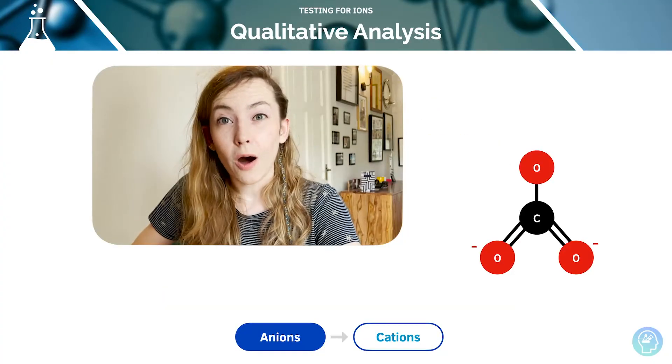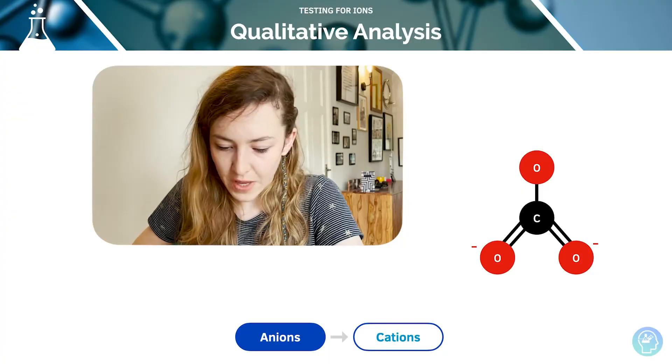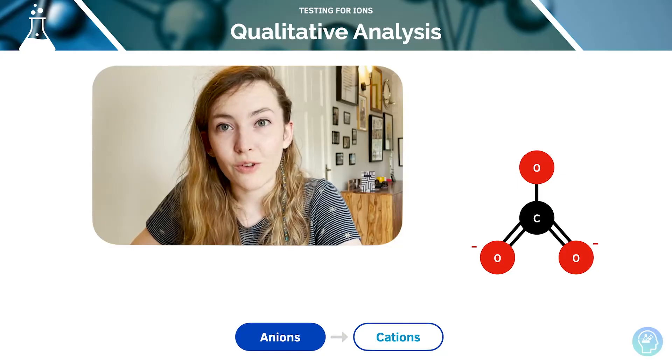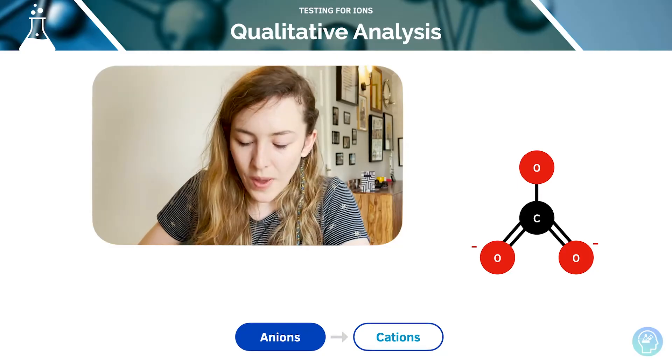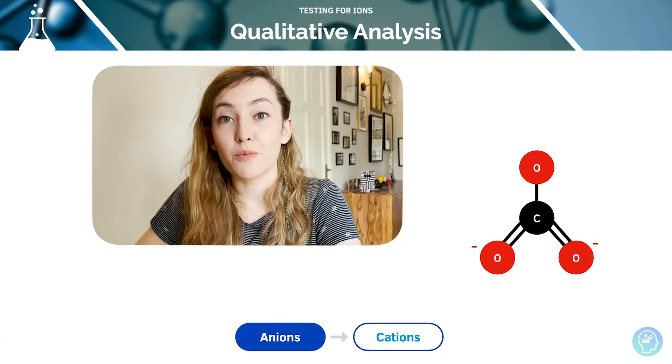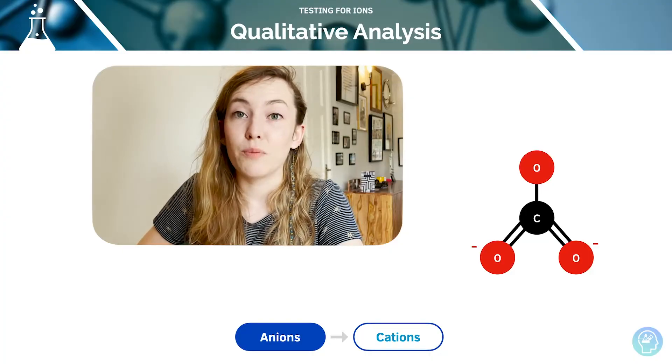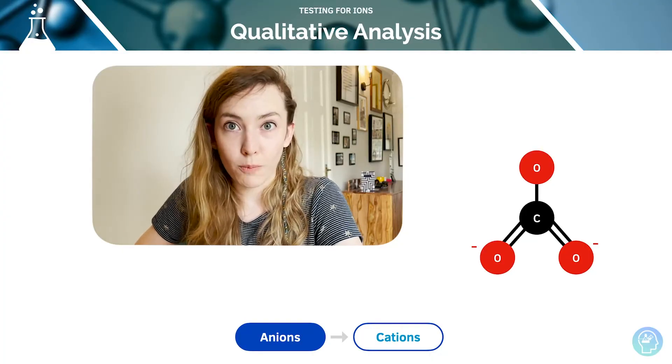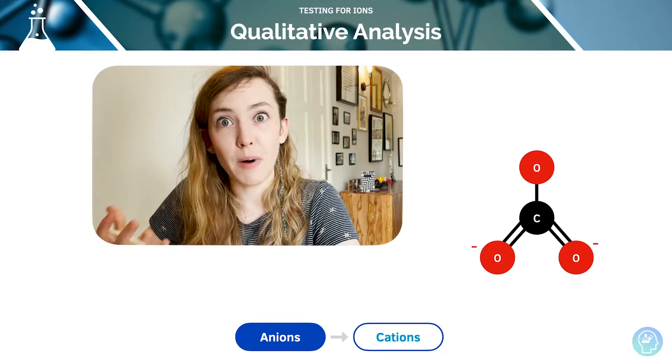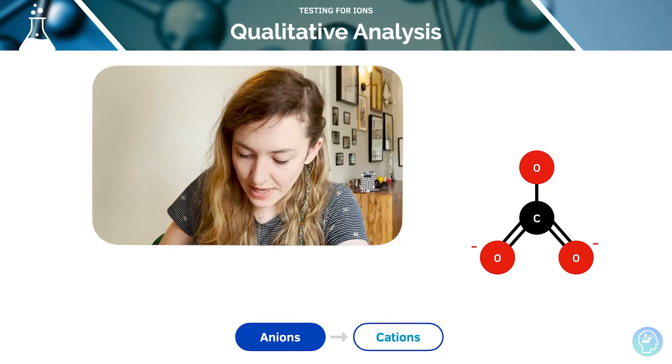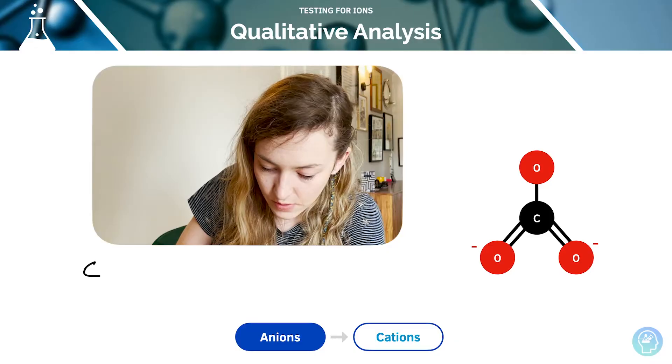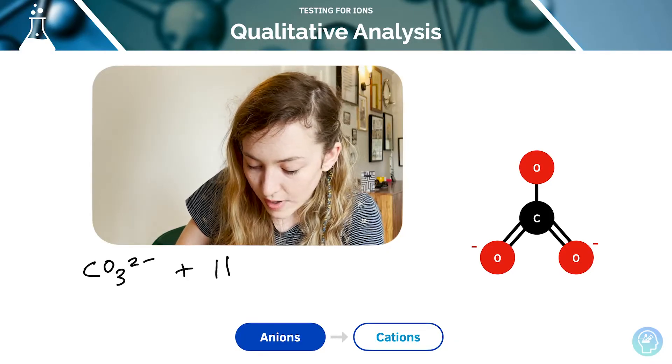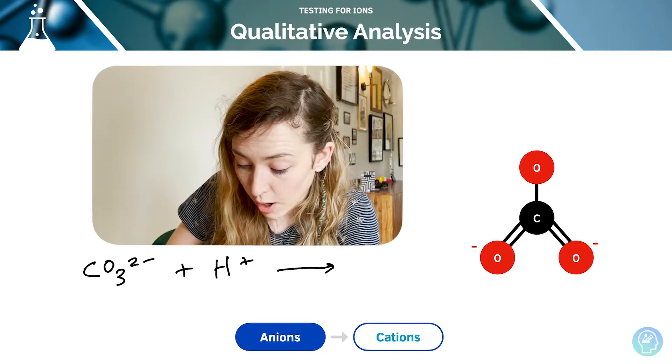Let's look at carbonate ions to start with. We can test for carbonate ions by mixing the unknown compound with a dilute acid. If we've got carbonate ions present, they'll react with the protons, the H+ in the solution, and they'll form carbon dioxide. You'll see effervescence bubbling occurring. For example, CO3²⁻ would react with any protons that have come from the acid, and it will release CO2 and H2O.